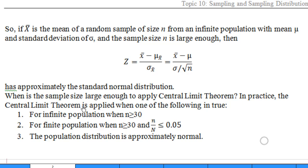When is the sample size large enough to apply the central limit theorem? In practice, the central limit theorem is applied when one of the following is true: (1) For infinite population when n is greater than 30. (2) For finite population when n is greater than 30 and n over capital N, where capital N is the population size, is less than or equal to 0.05. (3) The population distribution is approximately normal.